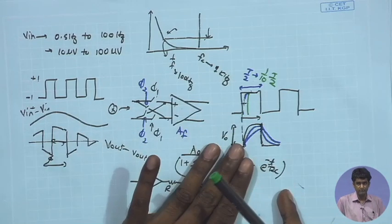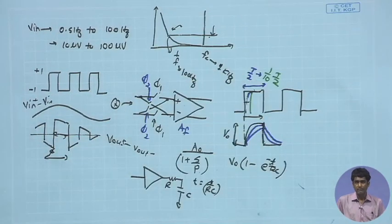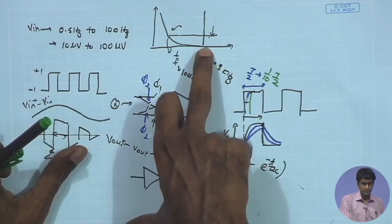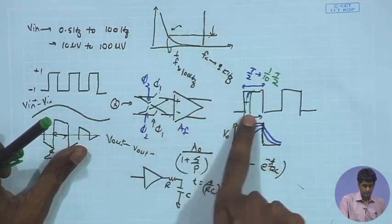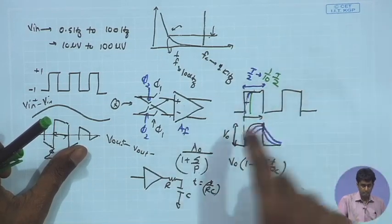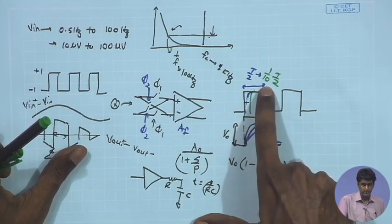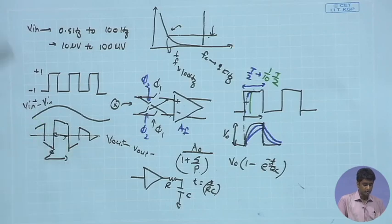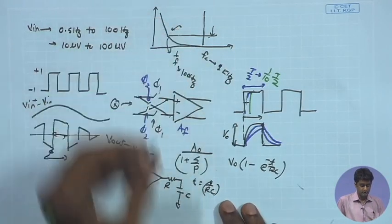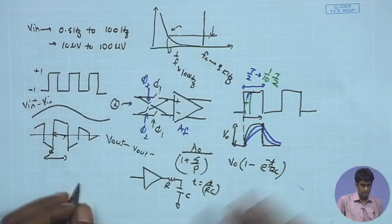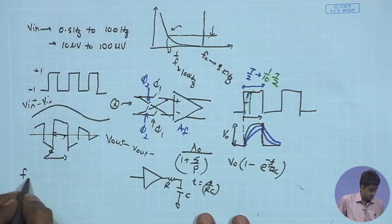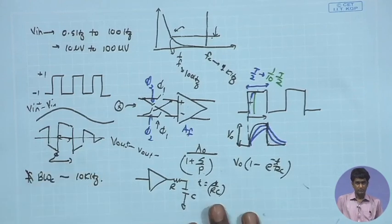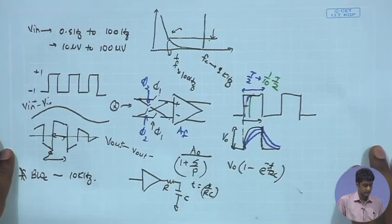So chopping shifts the signal to 1 kHz, but the amplifier bandwidth must be even higher because the chopping clock acts like a square pulse and the signal must settle fast enough. For good performance, the signal should settle within one-tenth of the half-period. We choose the closed-loop bandwidth to be ten times f_c, giving a closed-loop bandwidth of 10 kHz.